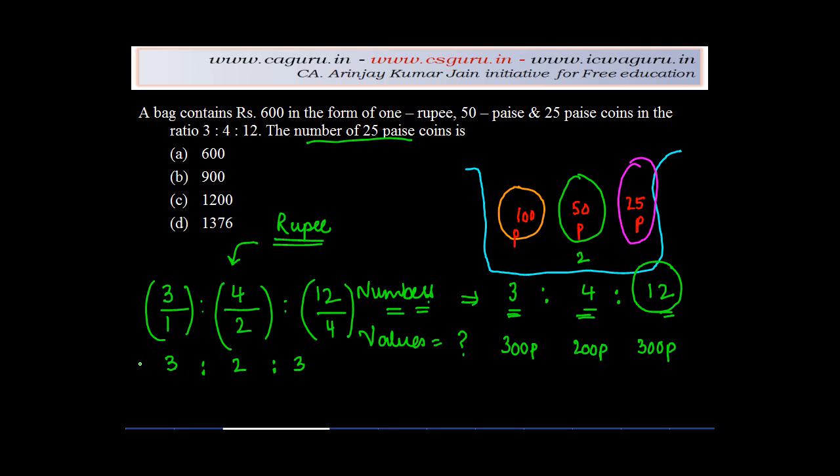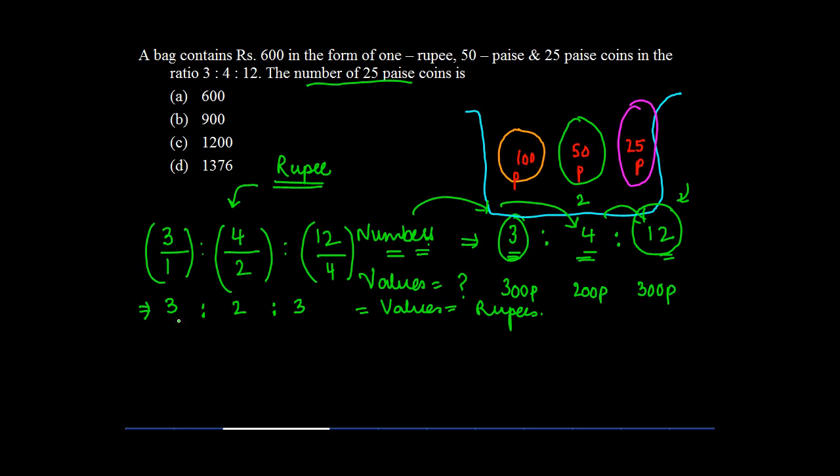Now basically what we have reached is, we have the proportion in terms of values, which are there in terms of rupees. Now it is comparable. This was not comparable. Why? Because it was given in the form of numbers. And the numbers were not comparable. Because 12 number of coins is different from 4 half rupee coin. It is different from 3 rupee coin.